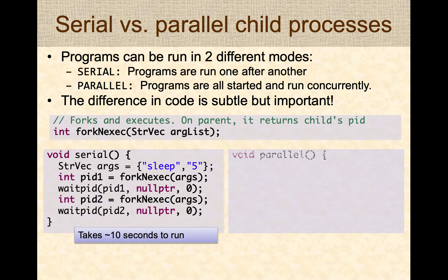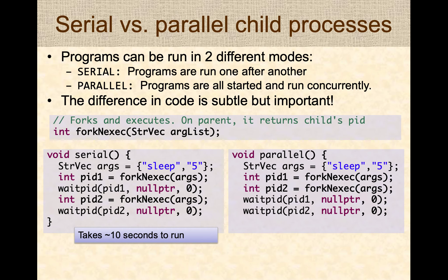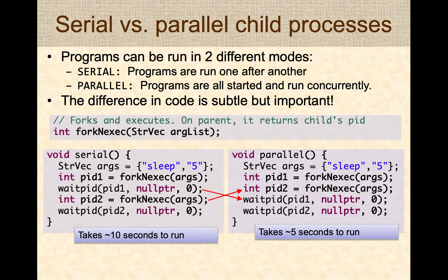Now let's do a small modification to make it run in parallel. We start one process and then immediately start a second process — now you have two processes running in parallel, both sleeping for five seconds. We then wait for these two processes to finish. In this sequence of operations, it only takes five seconds to run because two processes are running in parallel. The difference between these two setups is very subtle — we've just switched the position of two lines, and this modification makes it run either serially or in parallel. This is an important concept to keep in mind.